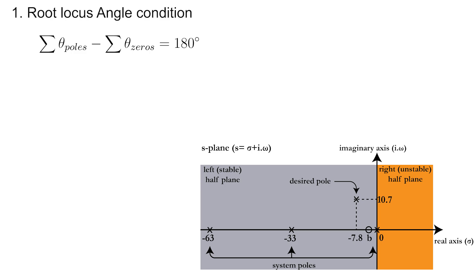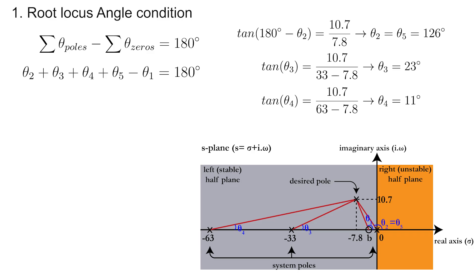The angle condition of the root locus says that the sum of the angles of the open-loop poles minus the sum of the angles of the open-loop zeros has to be equal to 180 degrees. Remember that the open-loop system contains 4 poles and you want to add zero at B. Just draw lines between the system poles and zero to the desired pole and highlight the angles. The angle condition then simplifies to the equation on screen. Using basic trigonometry, the angles with the numbers 2 to 5 can be determined with the equations on screen.